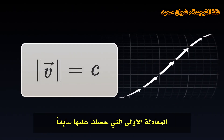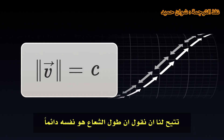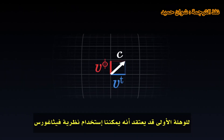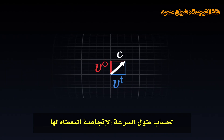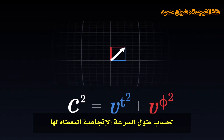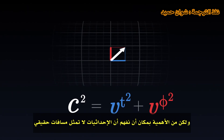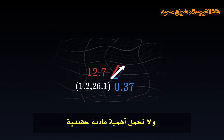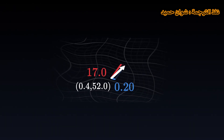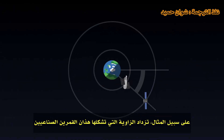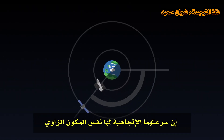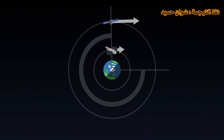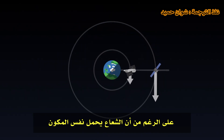The first equation we obtained before allows us to say that the length of the vector is always the same — this is the speed of light. At a glance, one might think that we can use the Pythagorean theorem to calculate the length of the velocity given its components. But it is crucial to understand that the coordinates do not represent real distances. Their values and their rate of change are arbitrary numbers which do not have real physical significance. For example, the angle formed by two satellites may increase at the same rate — their velocities have the same angular component — but it is easy to see that it does not mean they have the same speed. The farther satellite moves faster, even though its vector has the same component.